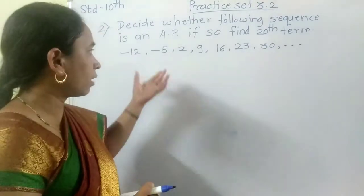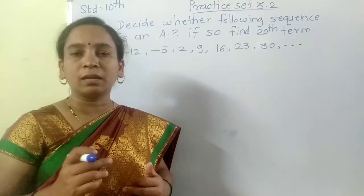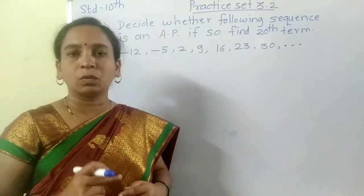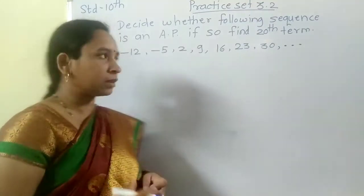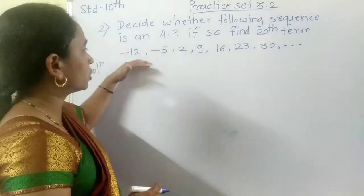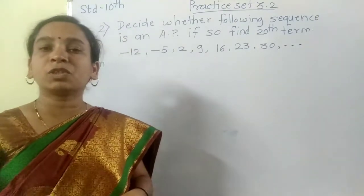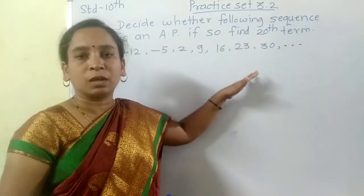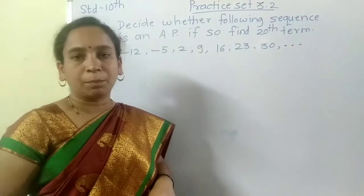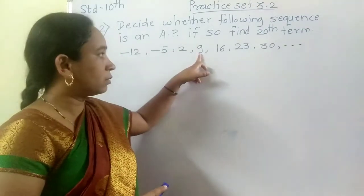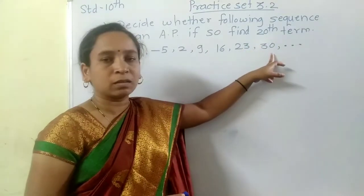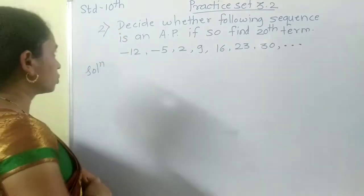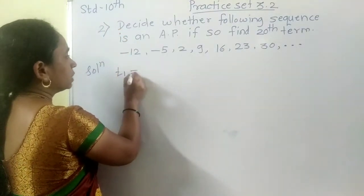Second example: a sequence is given and we have to decide whether it is an AP. If it is, we have to find out the 20th term using the formula TN equals A plus (N minus 1) times D. Solution: T1 equals -12, T2 equals -5, T3 equals 2, T4 equals 9. I will check the first two terms: T2 minus T1 equals -5 minus (-12), which equals 7.